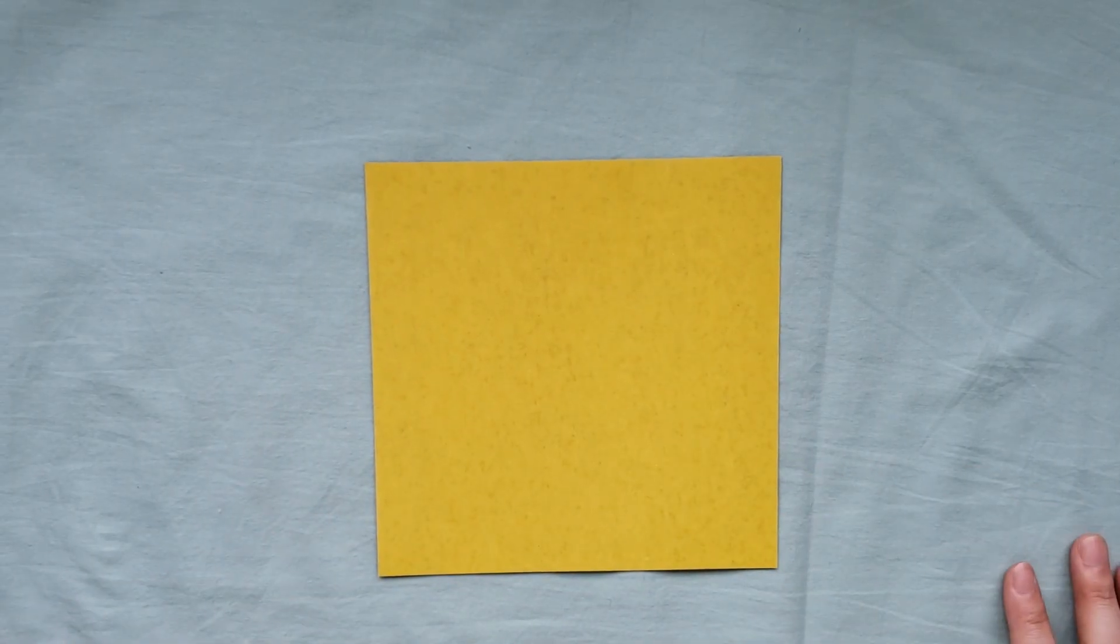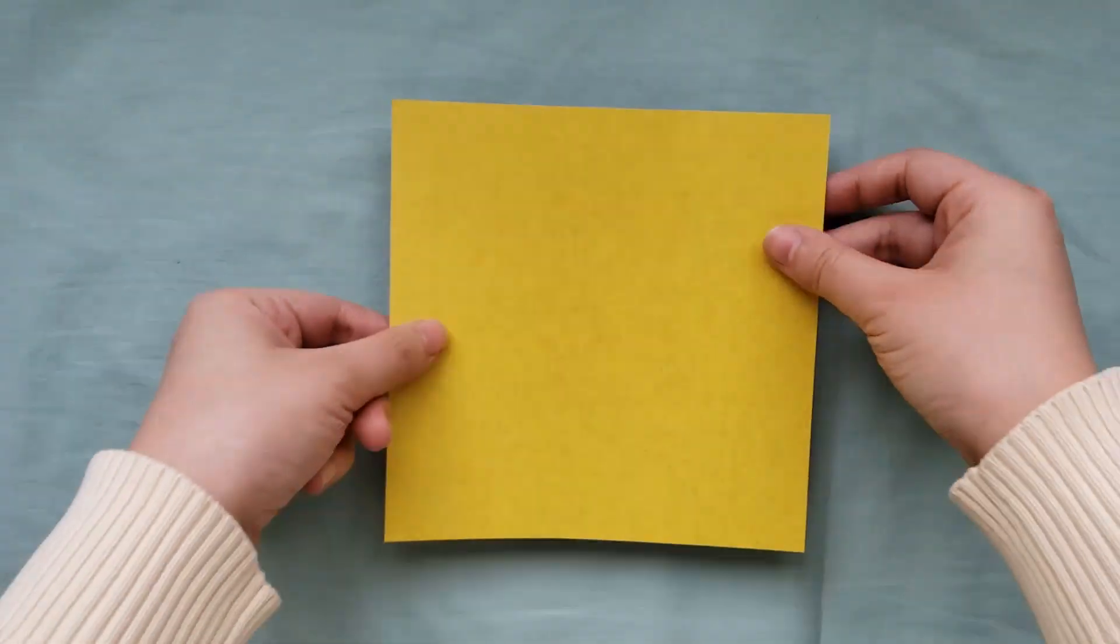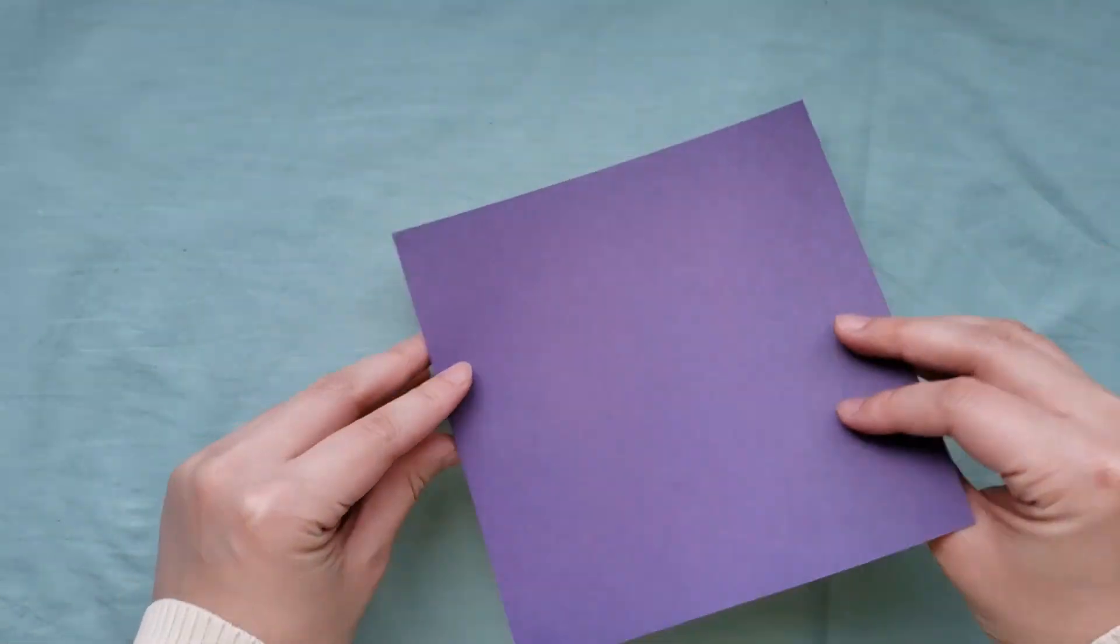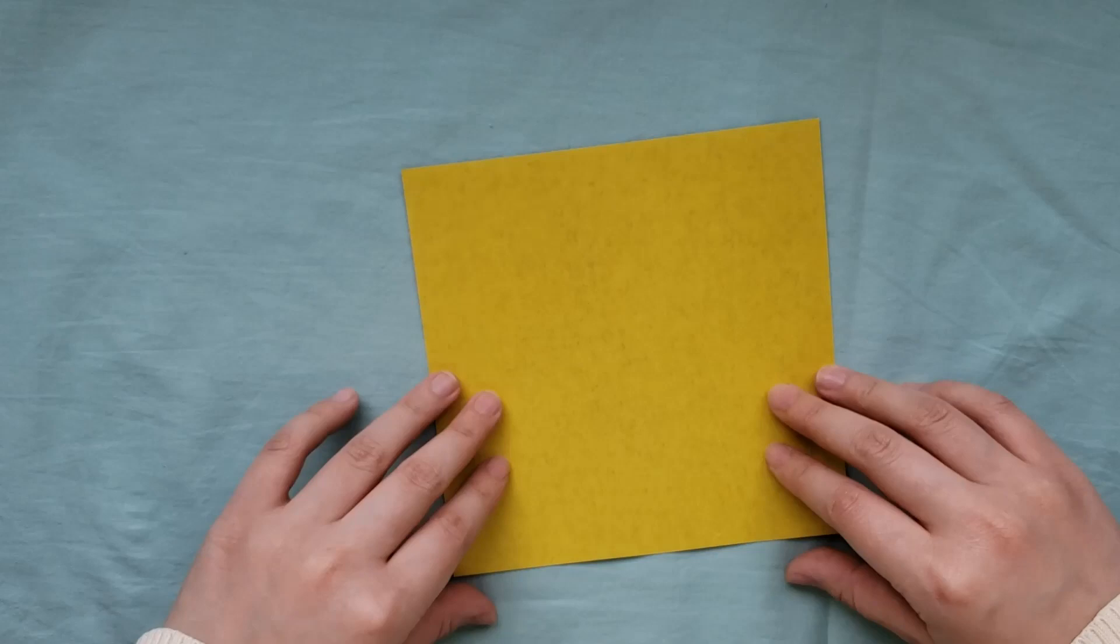What you're going to need is a square piece of origami paper. Here I have one that is 6 inch or 15 centimeter by 15 centimeter. It could be double-sided. I will make one that is yellow on the outside and purple on the inside.